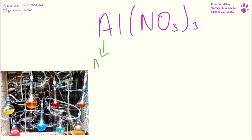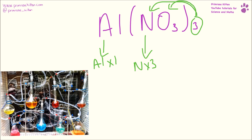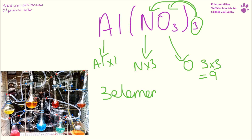Here we have aluminium and we have one of those. Now this three means everything inside is times by three, so we have nitrogen and we have three of those, and we have oxygen — we already have three of those, and now we have three lots of three, giving us nine oxygens. So we have three elements and thirteen atoms.